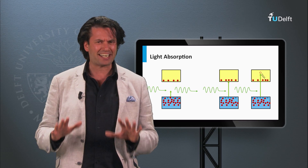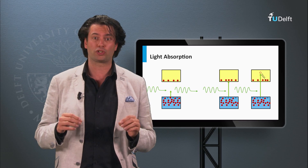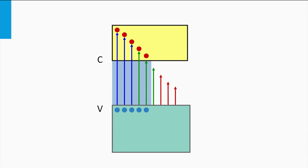Let's see how the bandgap affects the open circuit voltage and short circuit current density. In this illustration, the conduction band, valence band, and bandgap of the absorber material are shown. I represent the solar spectrum by arrows with various lengths and colors. The blue arrows correspond to energetic photons whose photon energy is much higher than the bandgap. The green and red arrows correspond to photons with lower photon energy. The red photons have a low energy, even smaller than the bandgap energy. Note that in this illustration the bandgap is relatively large.